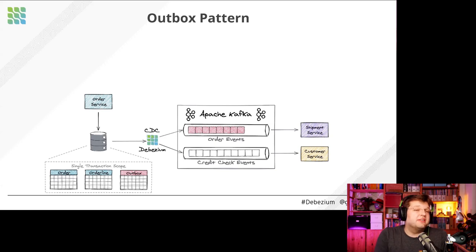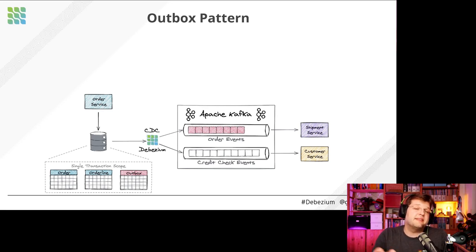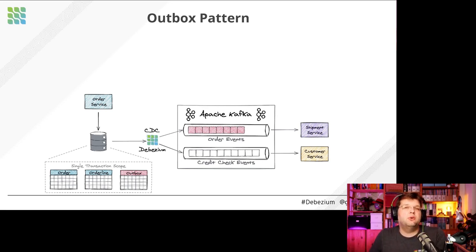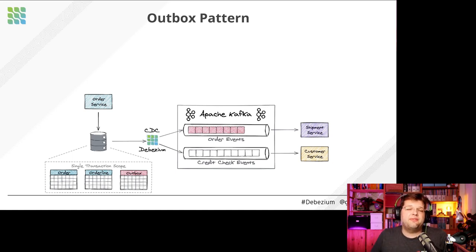The solution: if we can't update multiple resources atomically, we always can update a single resource — the database of our order service. Within one local transaction, the service updates its own order and order line tables, and also inserts a message into what we call the outbox table. This outbox table acts as a message relay, which we consume via Debezium to take those messages and send them to other consumers. Since all this happens as one atomic transaction, either everything is persisted including the outbox message, or the entire thing rolls back.